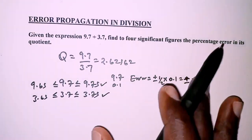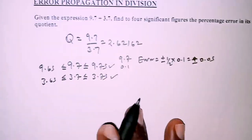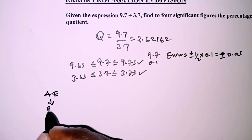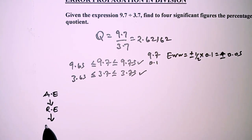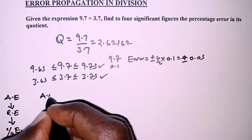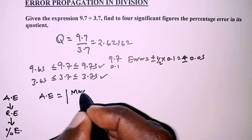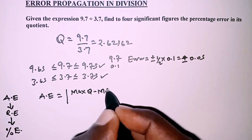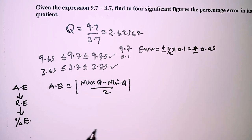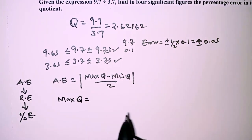The procedure is to get the percentage error in the quotient. First we get the absolute error, then the relative error, and finally the percentage error. The absolute error is obtained as the maximum quotient minus the minimum quotient, all divided by 2. So we need to get both the maximum and minimum quotients.